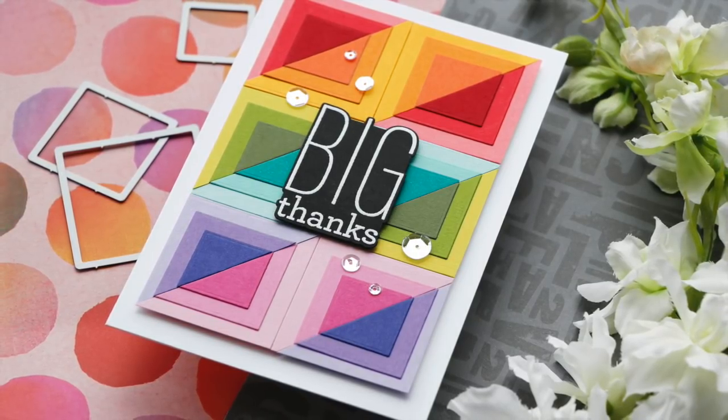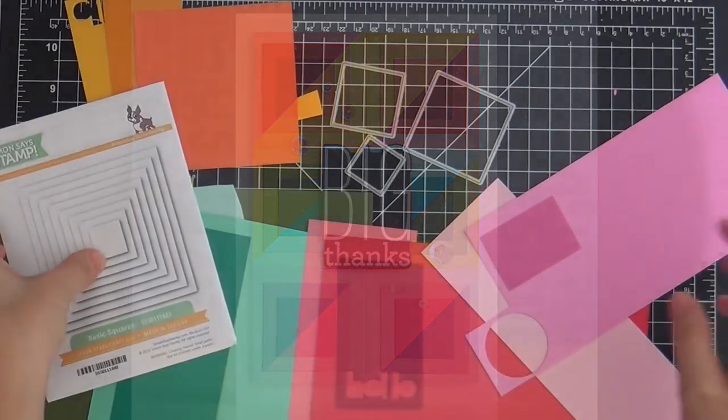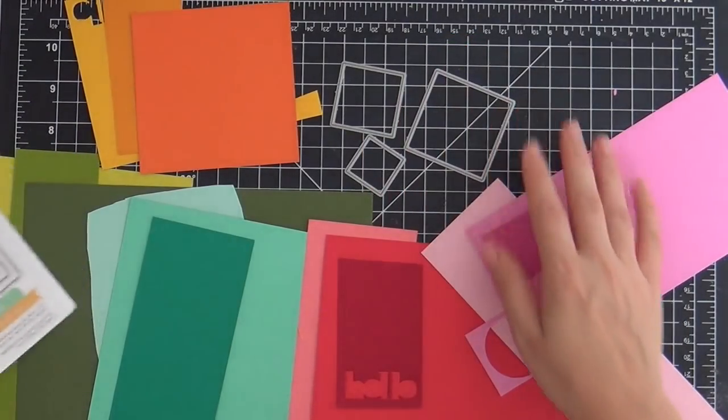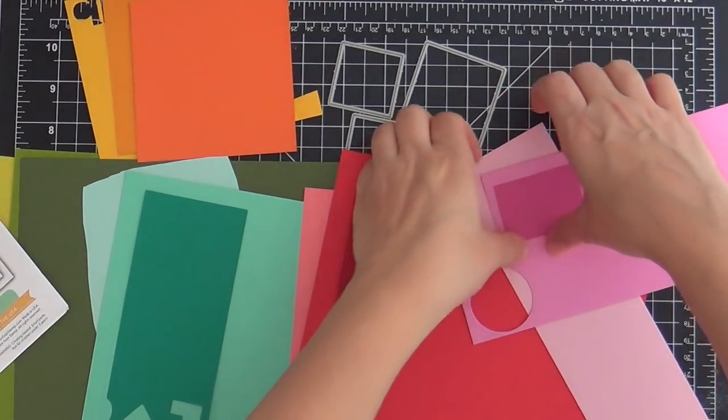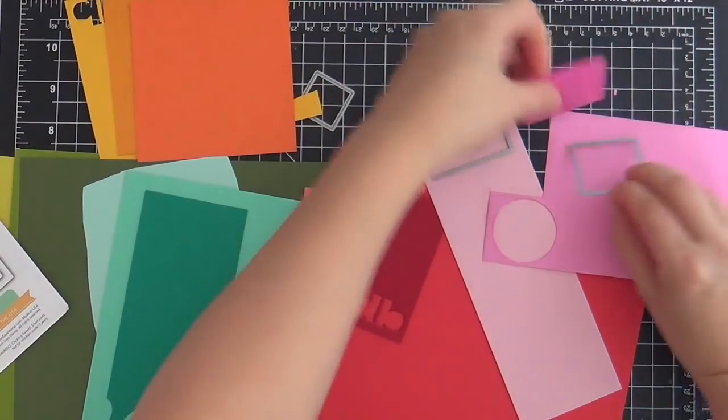Today I'm working with squares. It's hip to be square. I'm using the basic square die set by Simon Says Stamp and I'm going to be using the three smallest squares. If you have a square die set or if you don't, you can just cut some squares with your paper trimmer.